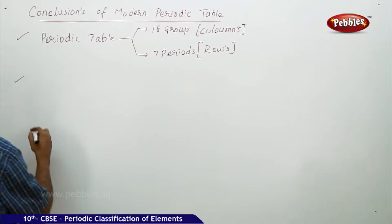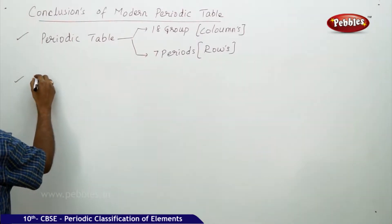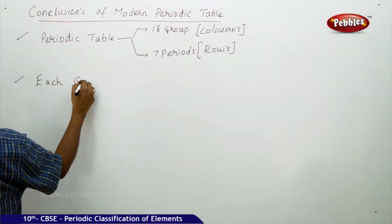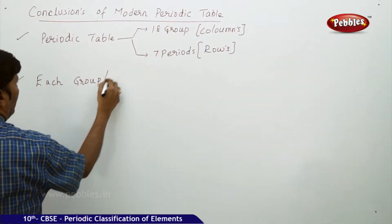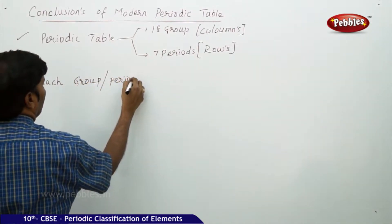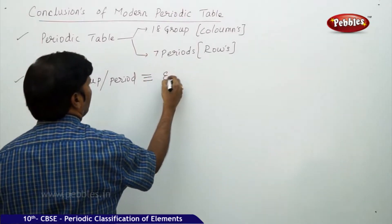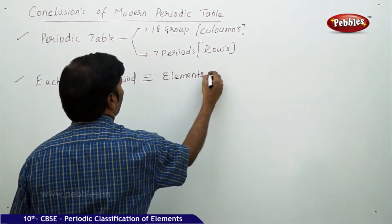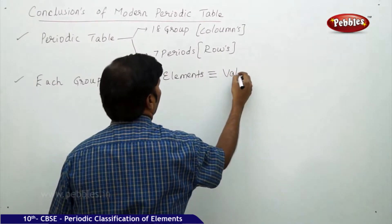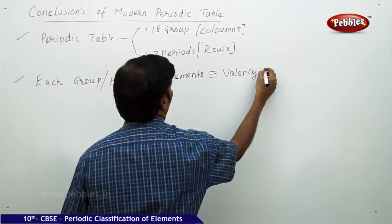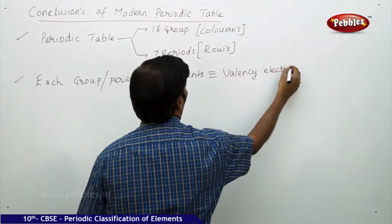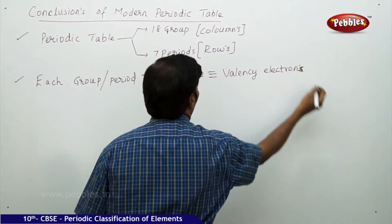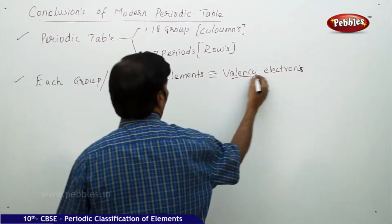Each group or period contains elements, and elements contain valency electrons.